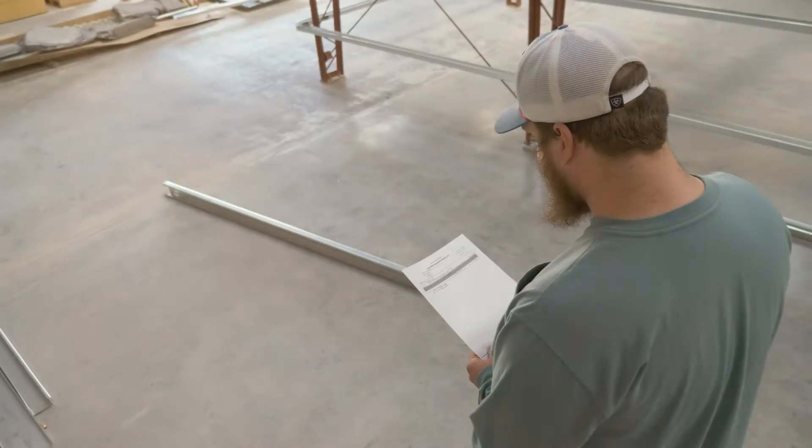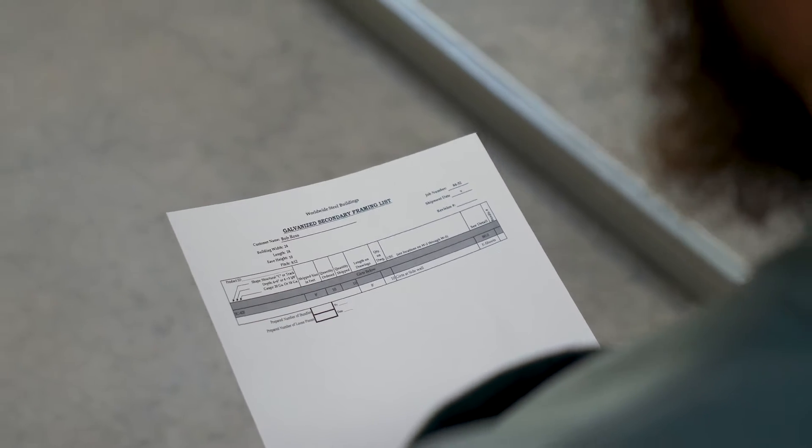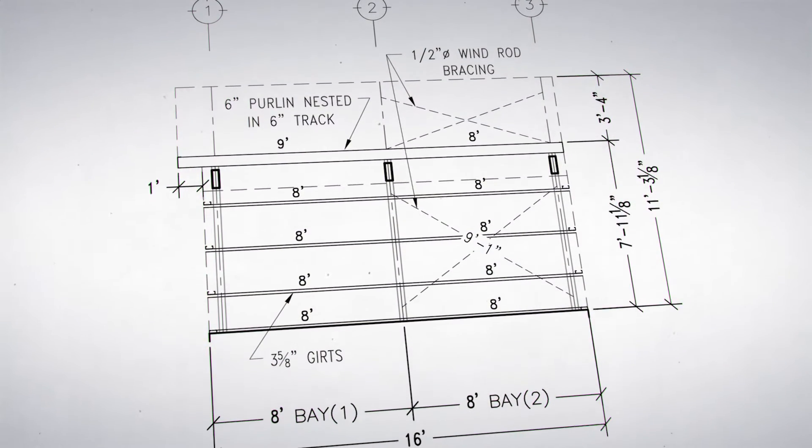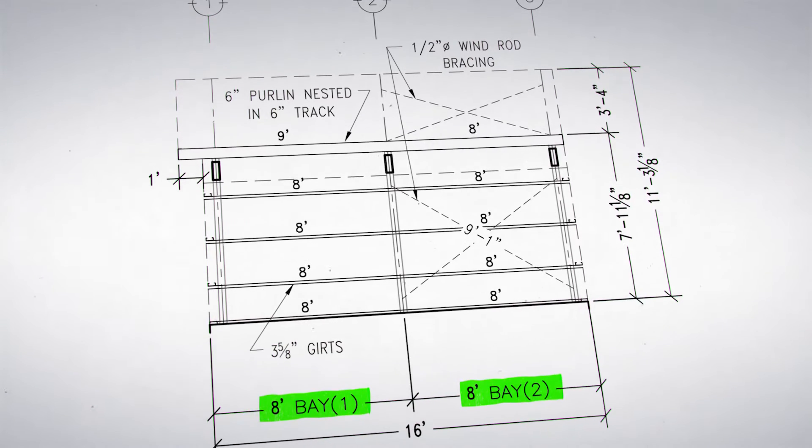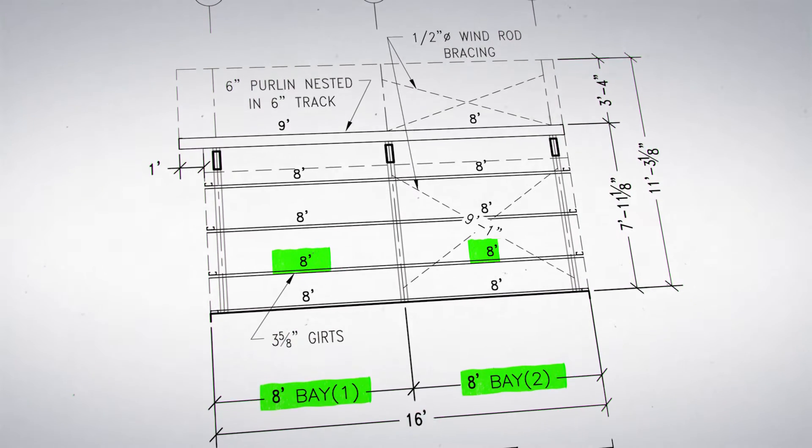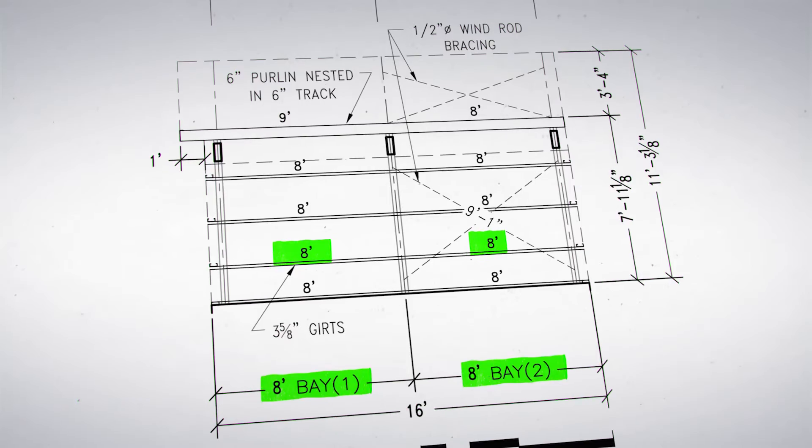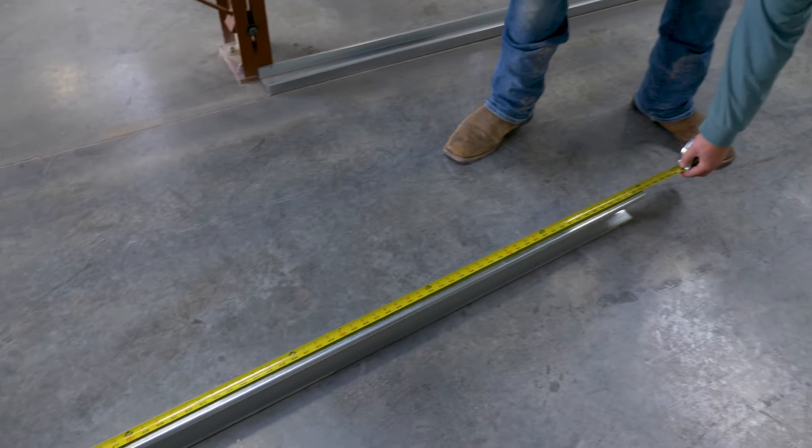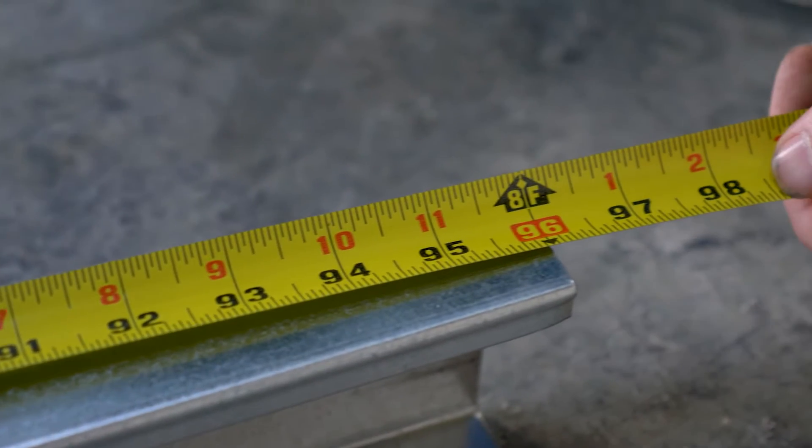It's a good idea to check the length of the girt prior to install. In our example, each sidewall bay is 8'0", and we have no overhead door openings in the walls. Therefore, we are using the girts that are 8'0" in length.